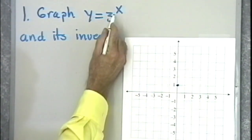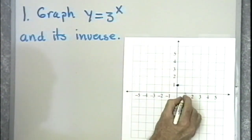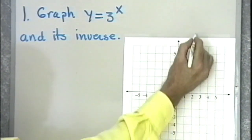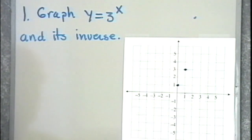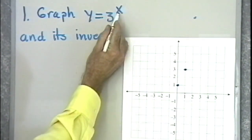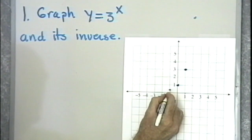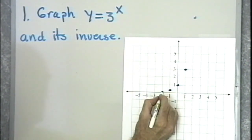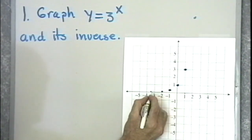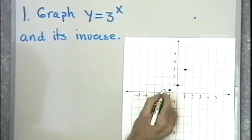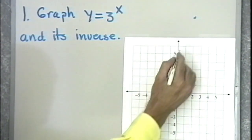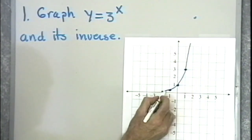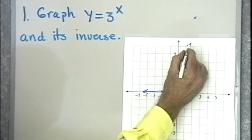I'll let x be equal to 1. 3 to the 1 is 3. So when x is 1, y is equal to 3. If I was to go out to x equal 2, y would be equal to 9, way up here somewhere. When I let x be equal to negative 1, 3 to the negative 1 is 1 third. When x is equal to negative 2, 3 to the negative 2 is 1 ninth. Then I'd have 1/27th, 1/81. I would get as close to the x-axis here as I want, but I would never touch or cross the x-axis. So this curve comes down like this and approaches the x-axis.